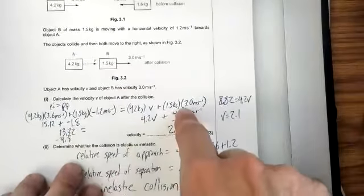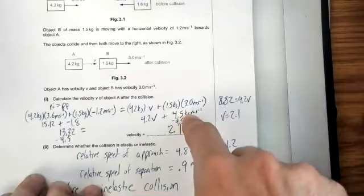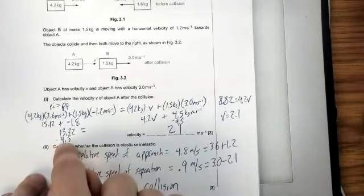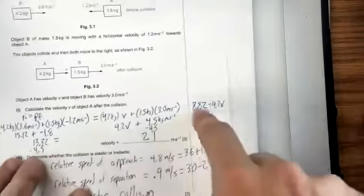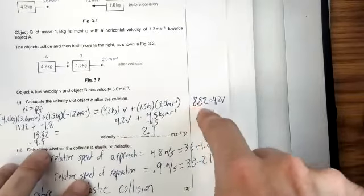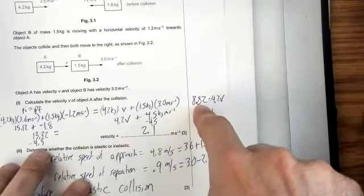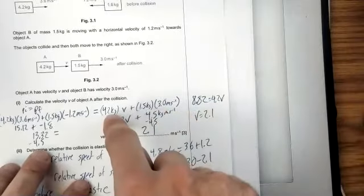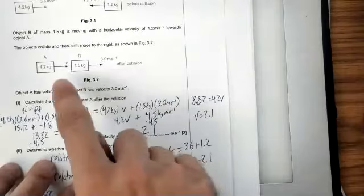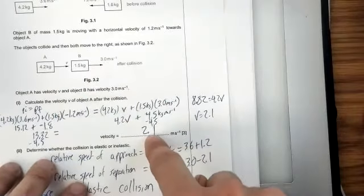Then you have just a perfectly solvable algebraic statement. So I subtract 4.5 kilogram meters per second from both sides. So 13.32 minus 4.5 is 8.82, and it still equals 4.2 V. Dividing each side by 4.2, I can deduce that this value V is 2.1 meters per second.